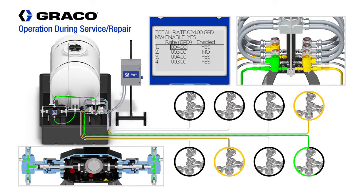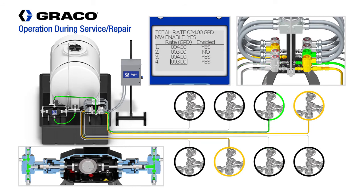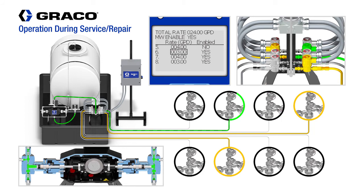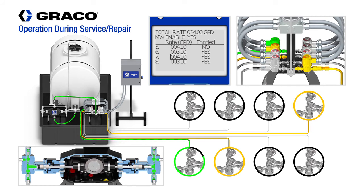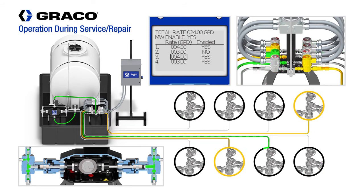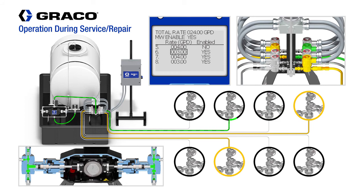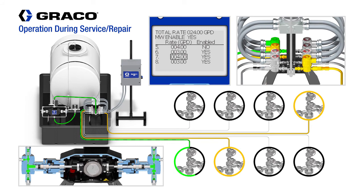Now let's take a look at what happens if we need to service or repair a solenoid valve. In this demonstration, we will show what happens when line 2 and line 5 are down for repair. When that happens, the Harrier Plus MPI controller will identify which lines are down and disable them. The dosing operation will continue to cycle while skipping the disabled solenoid valves. That way, you can replace the faulty solenoid valves without interrupting operation to the rest of the injection lines. Line pressure and individual line flow rates are maintained in the rest of the injection lines.